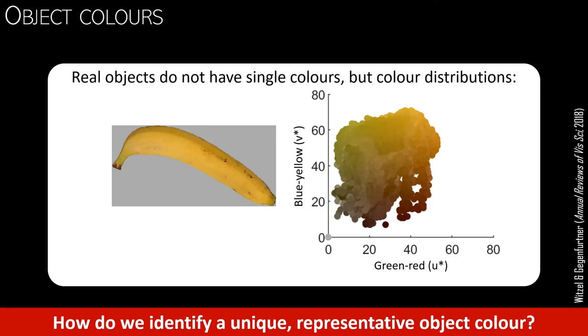The underlying challenge is that a real object does not have a uniform color. The diagram on the right side illustrates the color distribution of the photo on the left. Each dot corresponds to a pixel in the photo on the left, and you can see that there are a lot of different dots varying in lightness, hue and saturation.